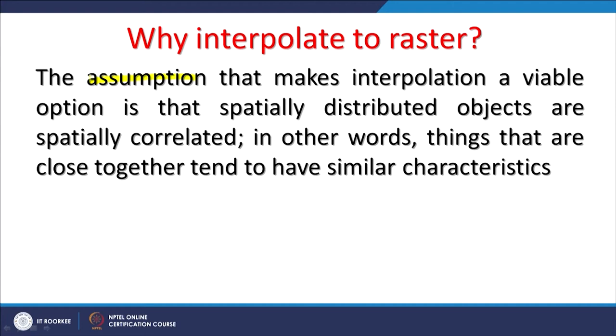Why interpolation: the assumption which makes interpolation a viable option is that spatially distributed objects — in our case, points — are spatially correlated. Things that are close together tend to have similar characteristics, and this is what is exploited in spatial interpolation. When we go for extrapolation, beyond the extent of the point input data we do not have any observation, so extrapolation is done. Extrapolation is always less reliable compared to interpolation, but sometimes we have to resort to extrapolation as well.